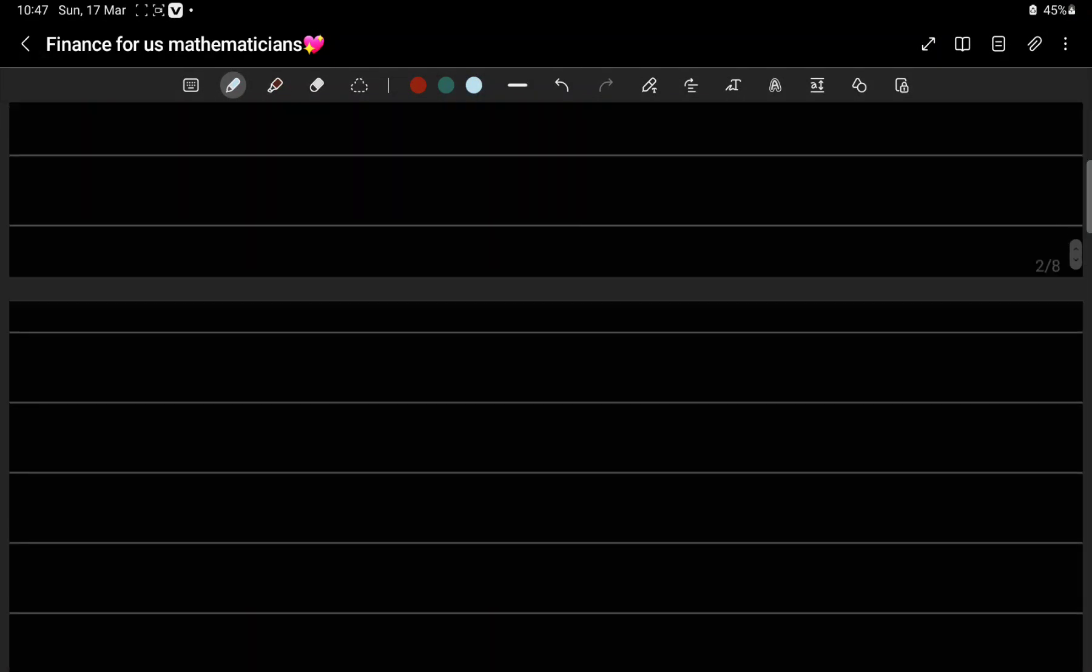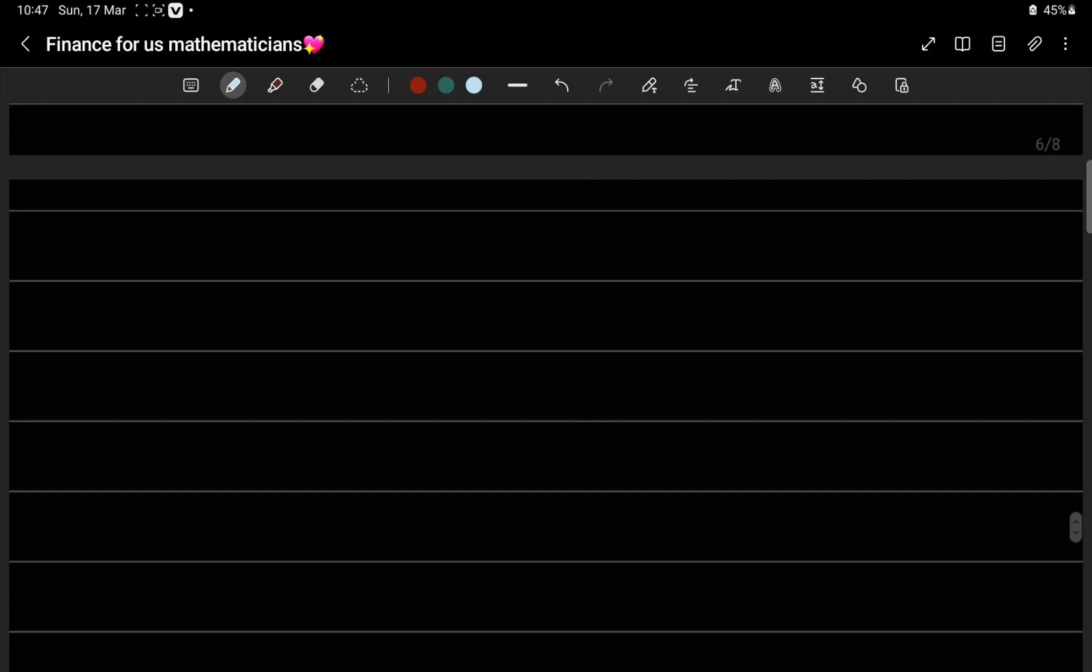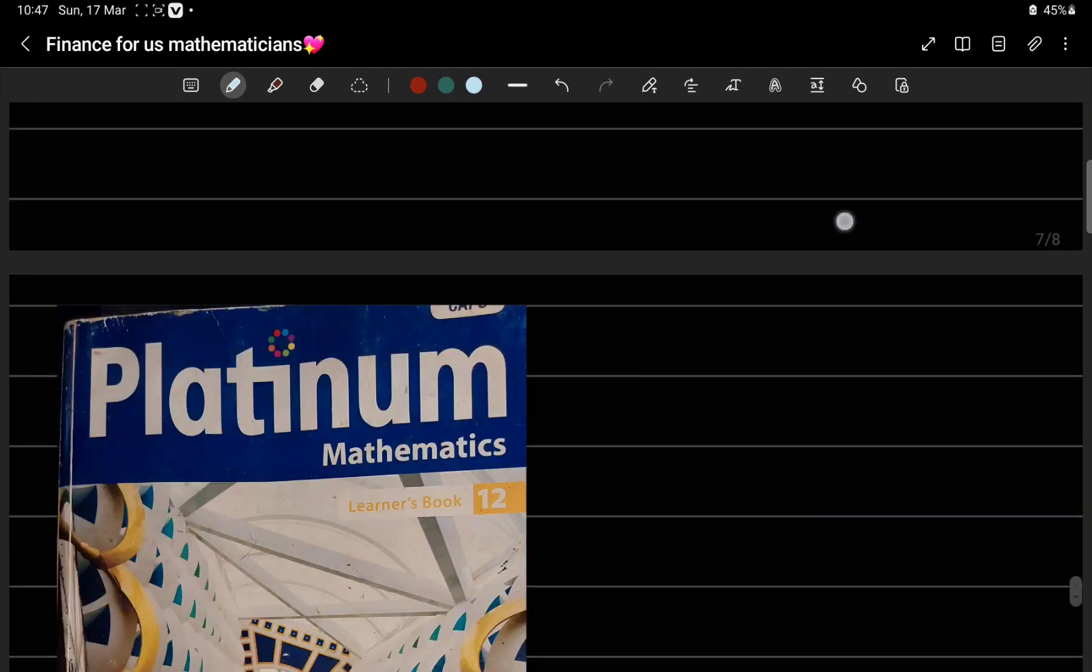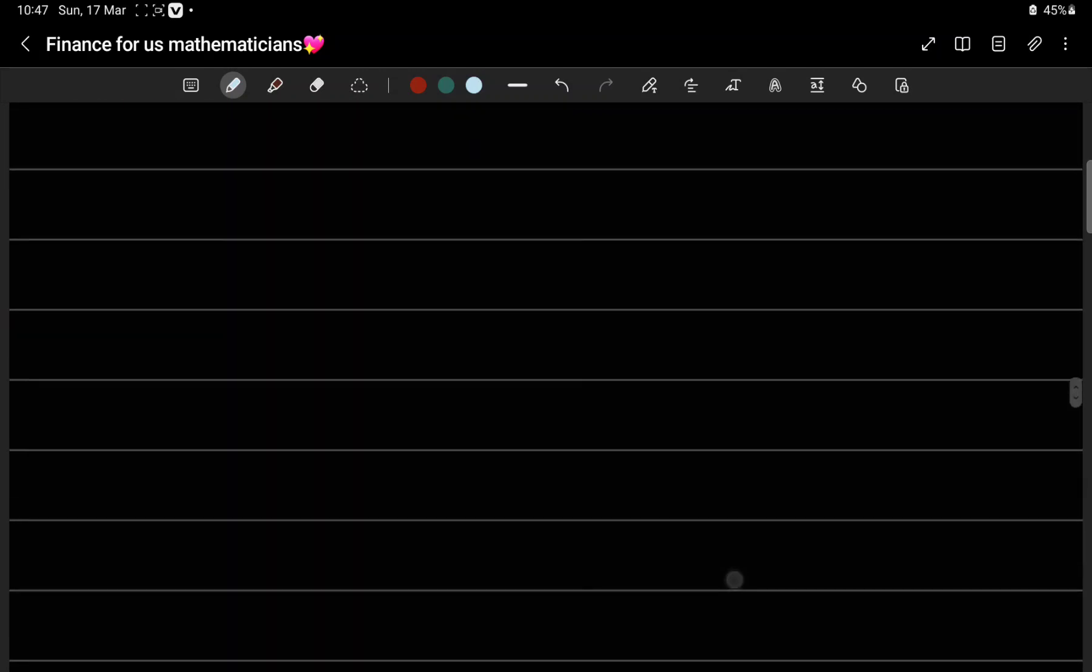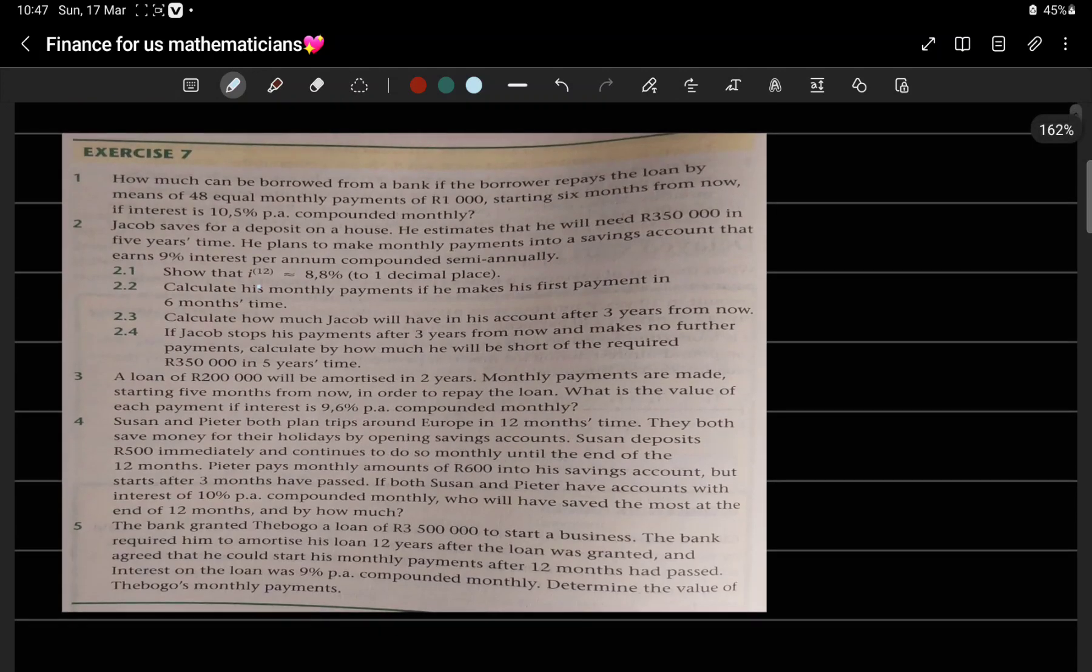Exercise 7. This is the textbook. Let's see number one: How much can be borrowed from a bank if the borrower repays the loan by means of 48 equal monthly payments of 1000, starting six months from now, if the interest is 10.5 percent compounded monthly?